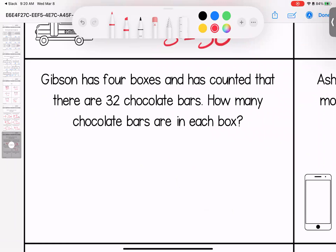Gibson has four boxes and he has counted that there are 32 chocolate bars. How many chocolate bars are in each box? So those four boxes have candy. All together, 32 bars. Each box has eight bars of chocolate.